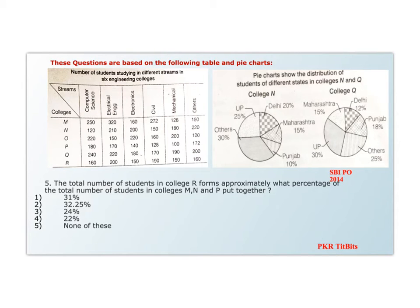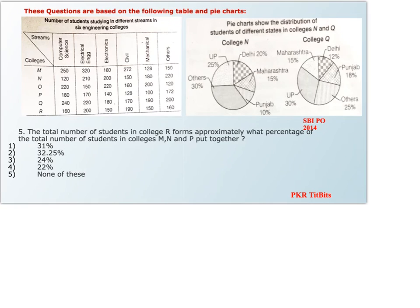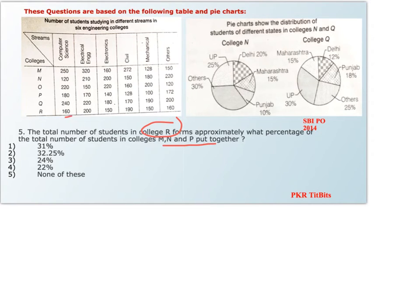The next question: the total number of students in college R forms approximately what percent of the total number of students in colleges M, N, and P put together? First we calculate the total for college R by adding all streams, which comes out to 1010.